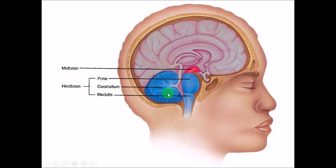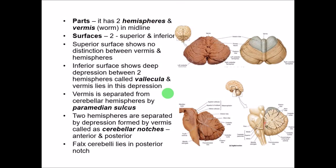The cerebellum has two hemispheres — right and left — just like the cerebrum. These two cerebellar hemispheres are separated by a narrow middle part which looks like a worm, called the vermis. In the drawn picture, the vermis is much more clearly visible. These are the two cerebellar hemispheres.